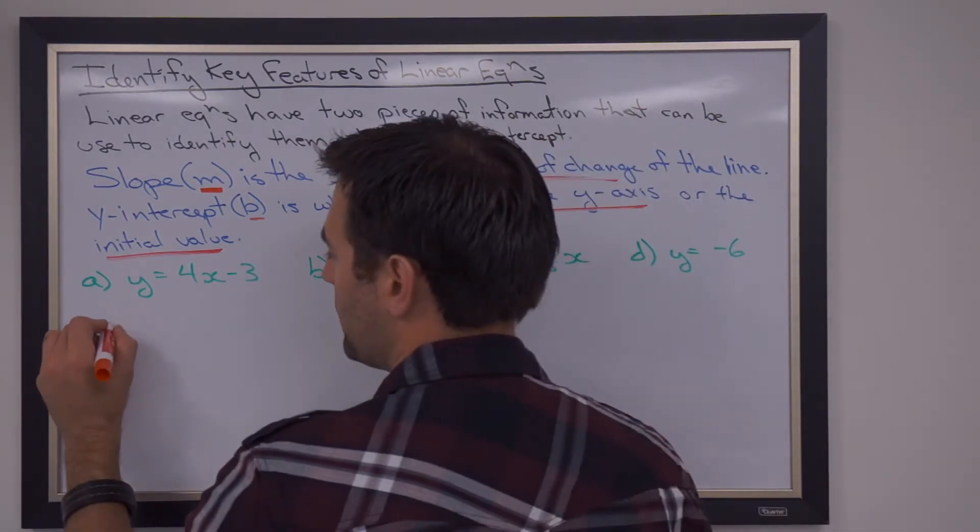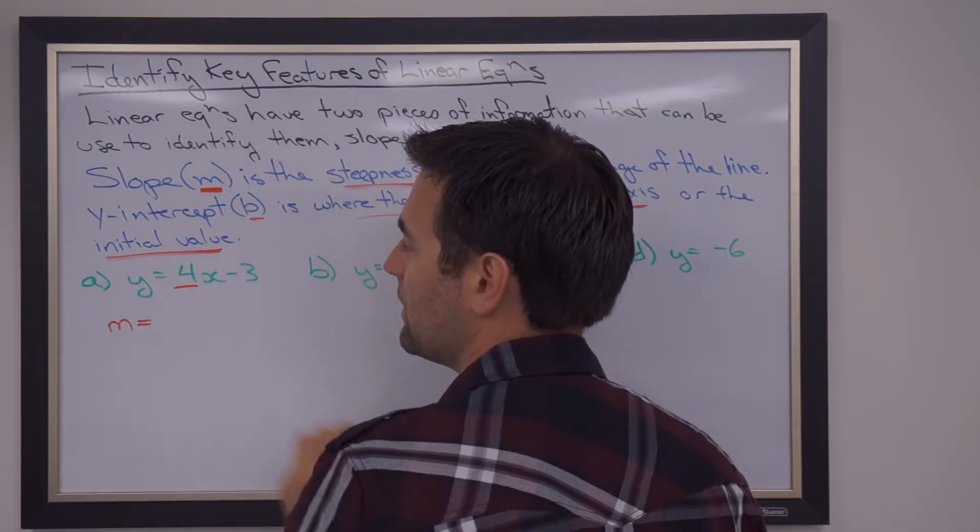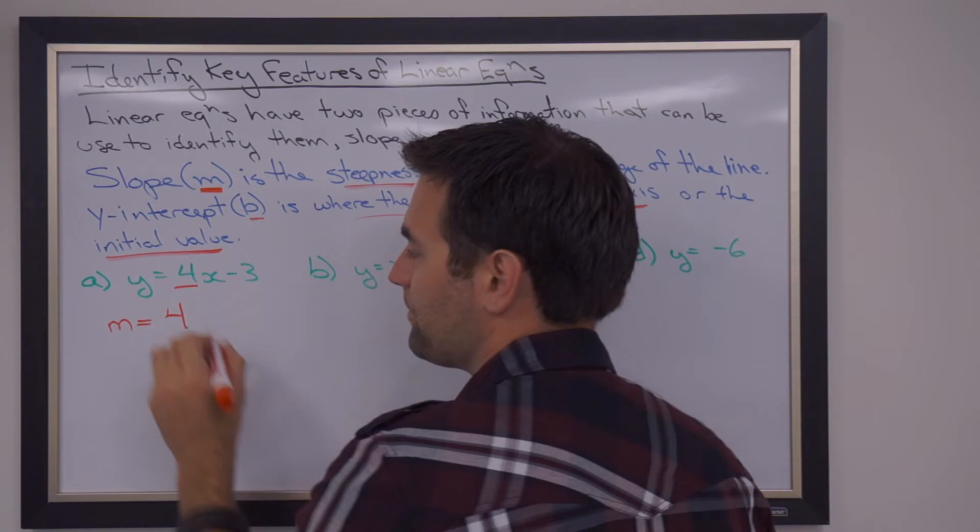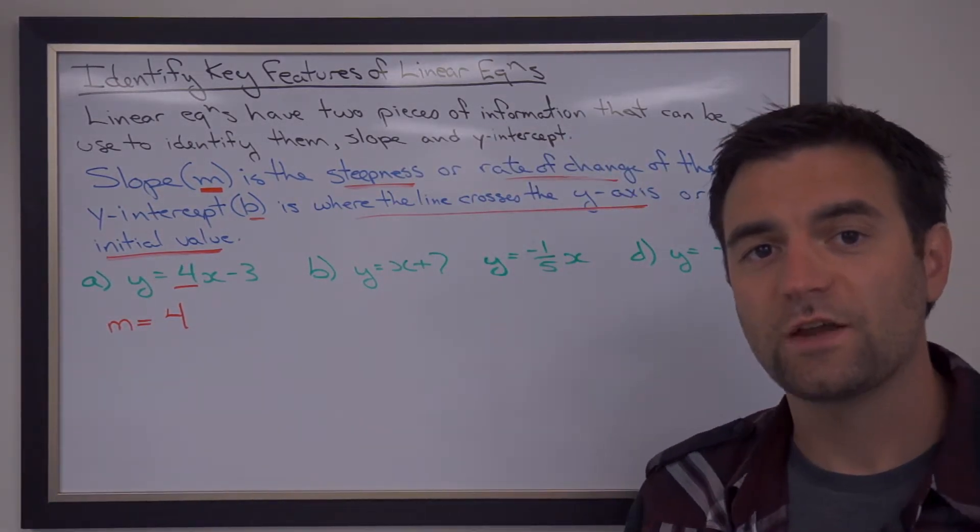So the slope, or M, in this first equation is the 4. The letter X is beside the number 4, so that is the slope.